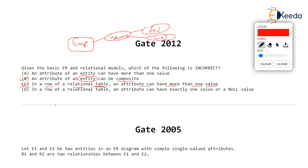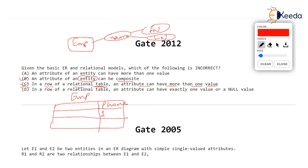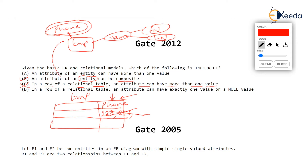For example, if there is an EMP table with a phone column and some employee has multiple phone numbers, you cannot store them as '123, 256, ...' in one cell. This violates the rule that every column in a relational table should contain atomic values.